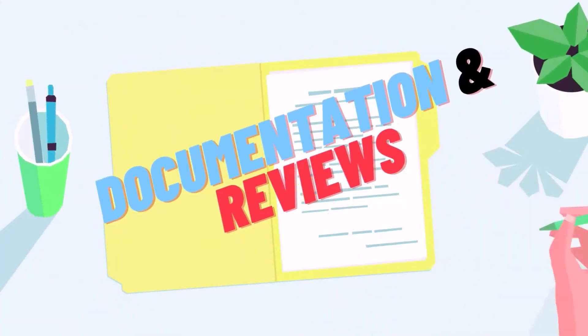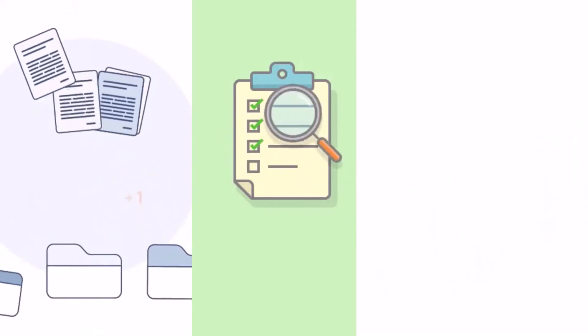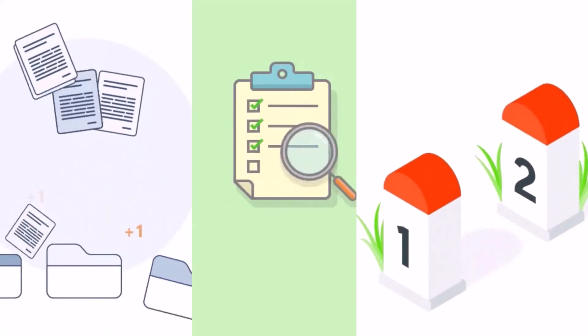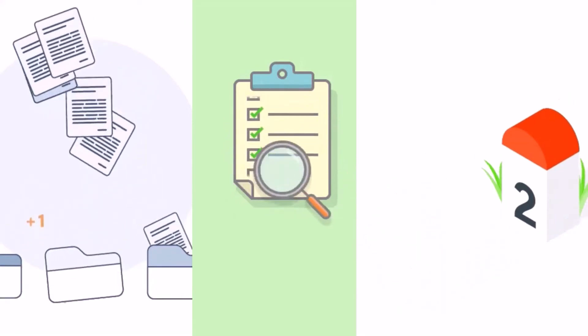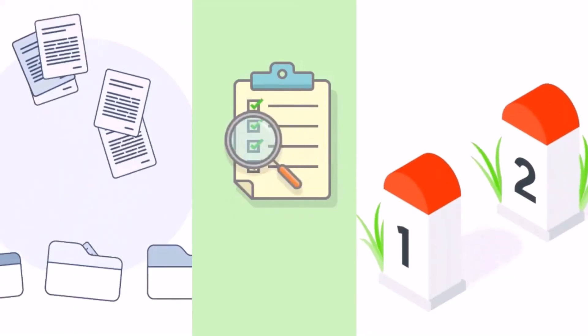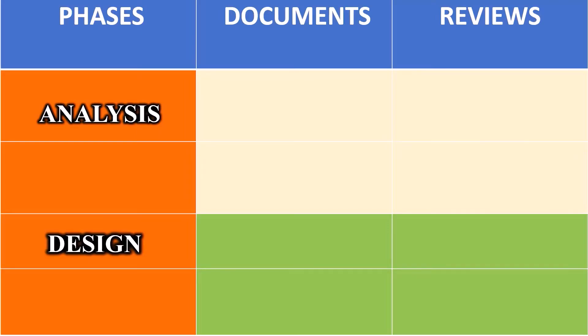Next we are going to see about documents and reviews. As the project evolves, it is difficult to identify the resources extended and to predict schedule delays. Establishing milestones, review points, and documents can improve project visibility. In each phase of development, documentation and review take place.